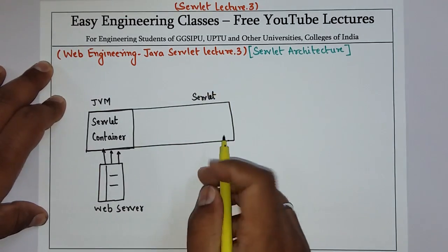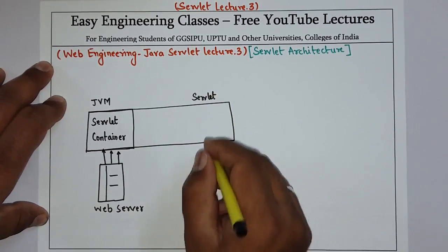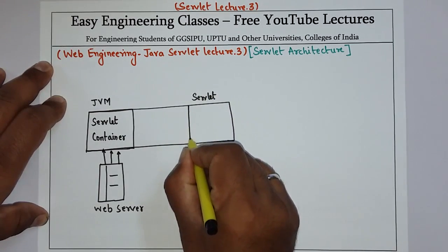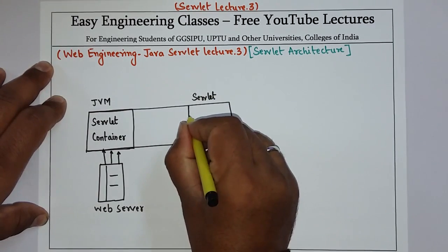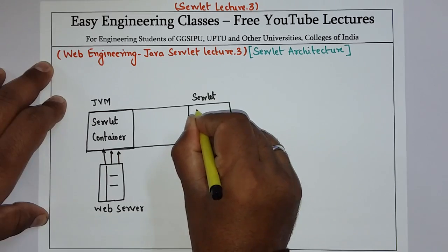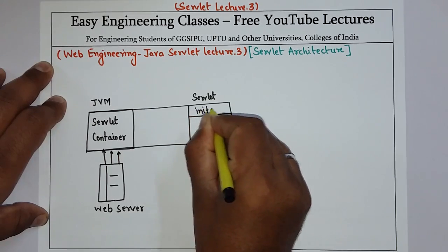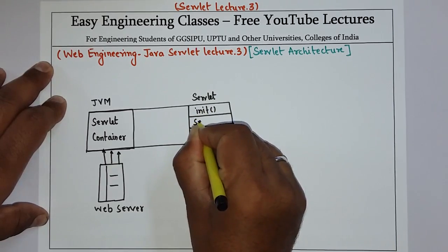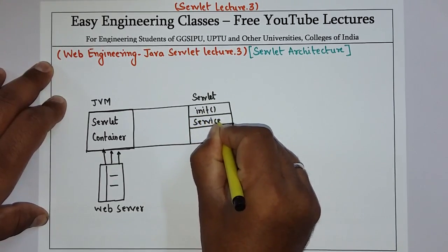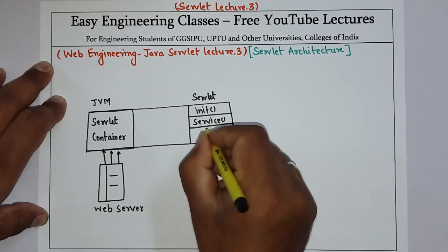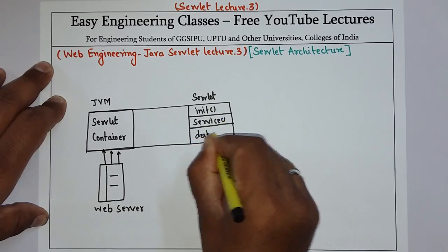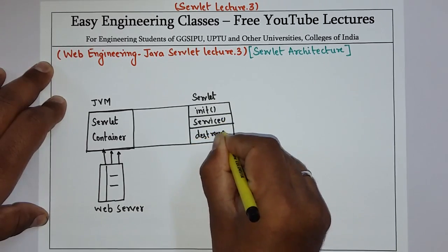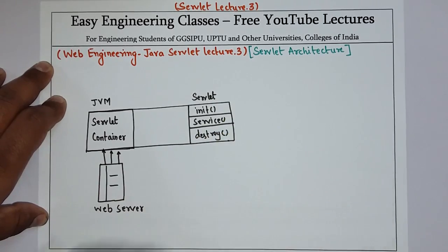In the life cycle of a servlet, we have seen three different methods that are present in the servlet. The first method is the init method, the second method is the service method, and the last is the destroy method. That is the servlet.